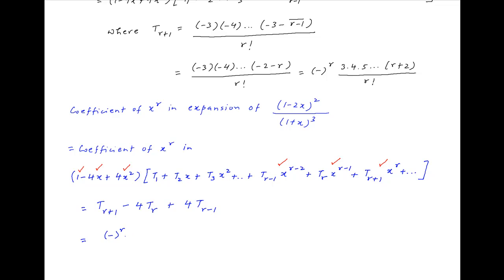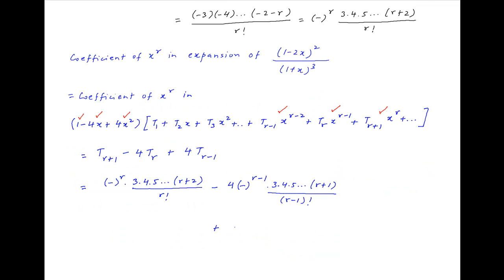Now, using the expression for the general term t_{r+1} obtained above, the coefficient of x raised to the power r is equal to (minus 1) raised to the power r times 3 times 4 times 5 and so on till (r plus 2) divided by r factorial, minus 4 times (minus 1) raised to the power r minus 1 times 3 times 4 times 5 and so on till (r plus 1) divided by (r minus 1) factorial, plus 4 times (minus 1) raised to the power r minus 2 multiplied by 3 times 4 times 5 and so on till r divided by (r minus 2) factorial.